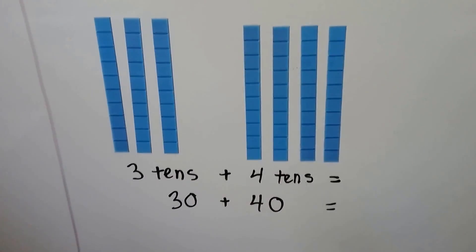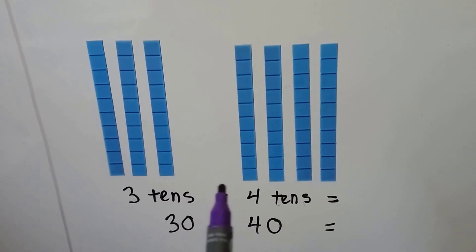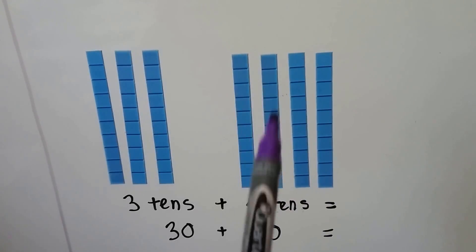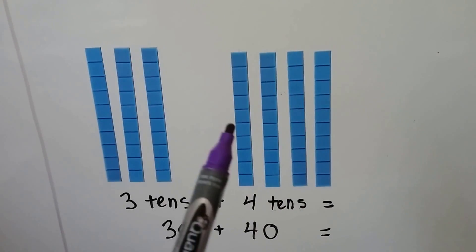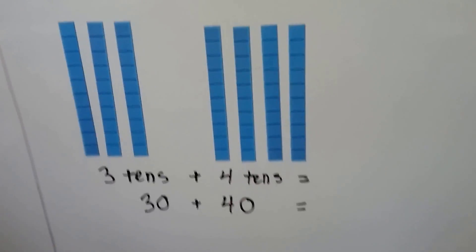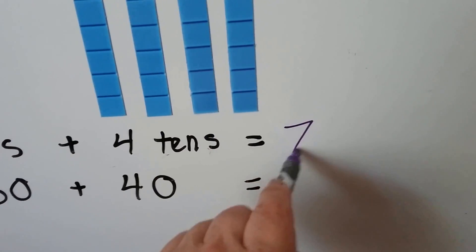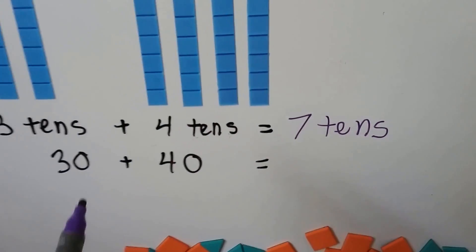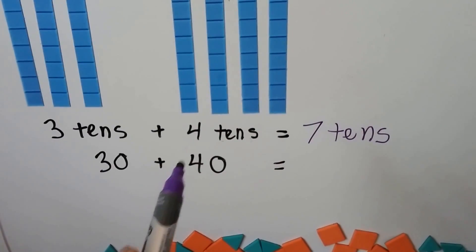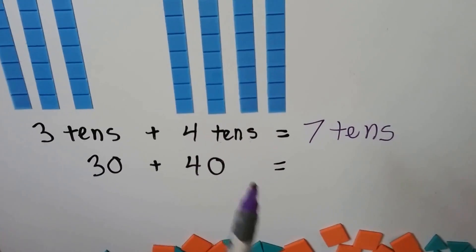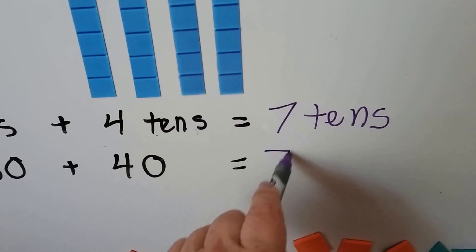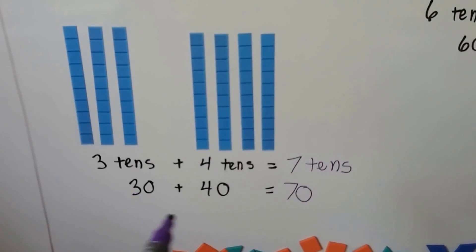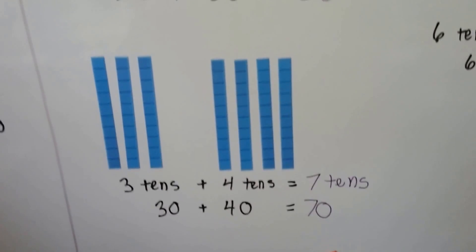Let's try another one. Now we have three tens plus four tens. We think three plus four. Three, four, five, six, seven. That's seven tens. That's thirty plus forty. That's seventy. See? The seven with the zero, just like that's a three with a zero and that's a four with a zero for thirty and forty.